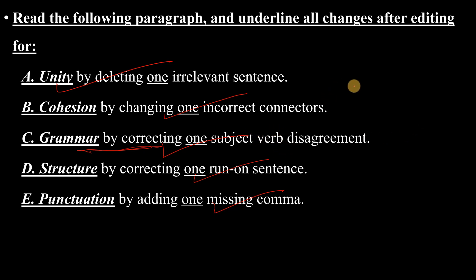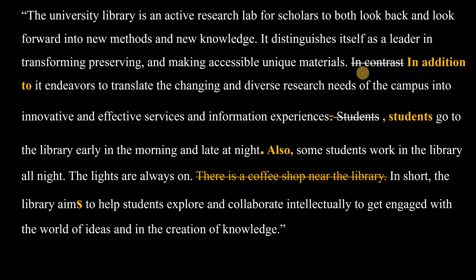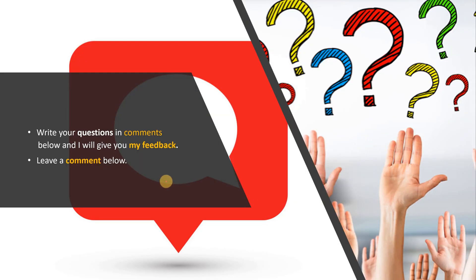So we have explained all five corrections. Some I explained in class and also in previous videos, so make sure to check them out and understand them very well. In the exam, cross out the mistake and write the correct connector, add the comma and delete the period, change capital letters to lowercase where needed, and cross out the irrelevant sentence. If you have any questions, write them in the comments and I'll give you my feedback. Thank you everybody, and good luck on the exams.